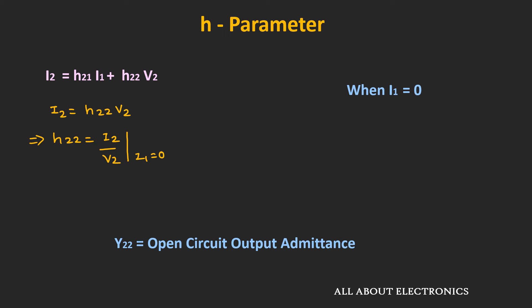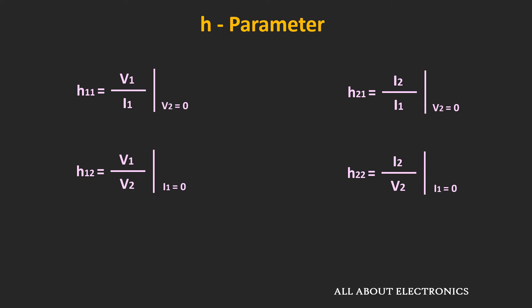Here is the representation of all four parameters. As you can see, all four parameters have different units — h11 has the unit of impedance, h22 has the unit of admittance, while h21 and h12 are unitless parameters. Because each parameter has a different unit, these parameters are known as the hybrid parameters.